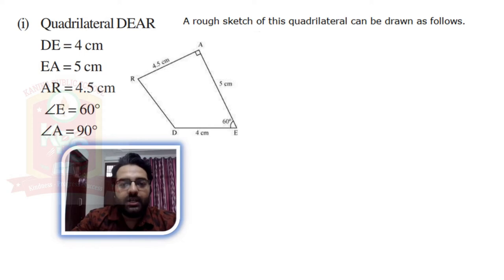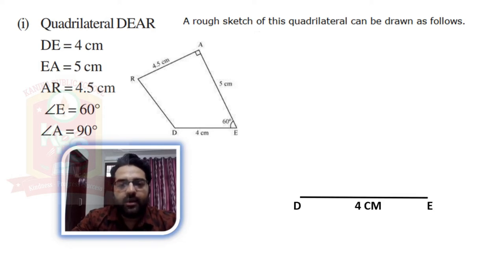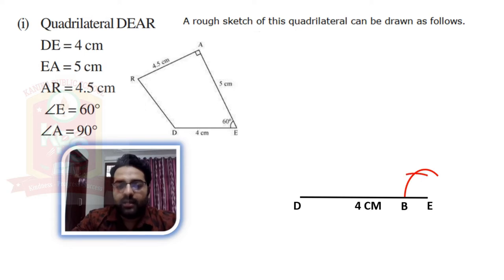So first of all, we will draw DE, which is our base line, 4 cm. And for angle E, which is 60 degrees, we will draw an arc. Suppose it is intersecting DE at point B; keeping the same radius on compass at B, we draw another arc. If we join this line, this gives an angle of 60 degrees.